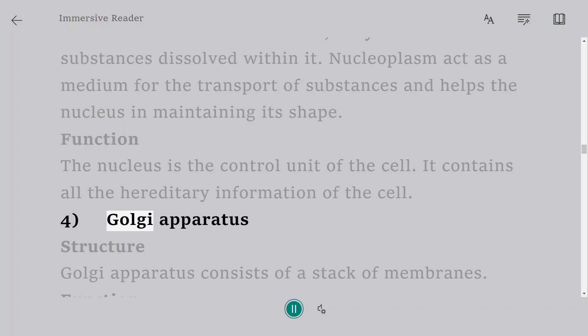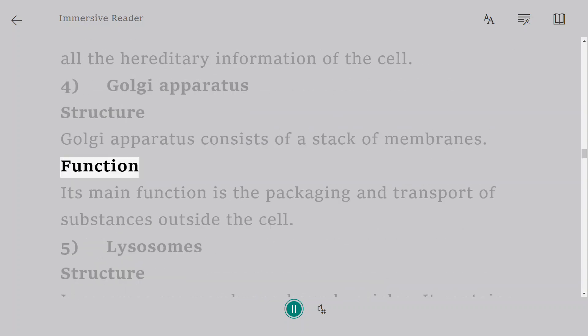4. Golgi apparatus. Structure: Golgi apparatus consists of a stack of membranes. Function: Its main function is the packaging and transport of substances outside the cell.